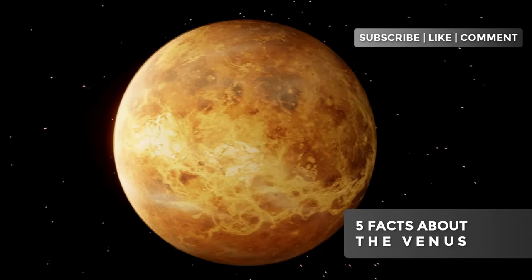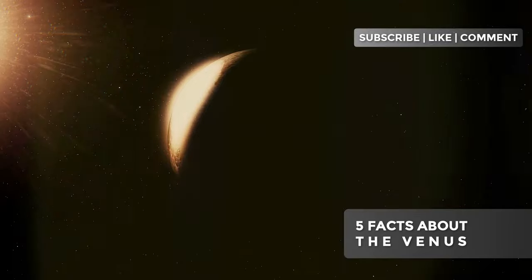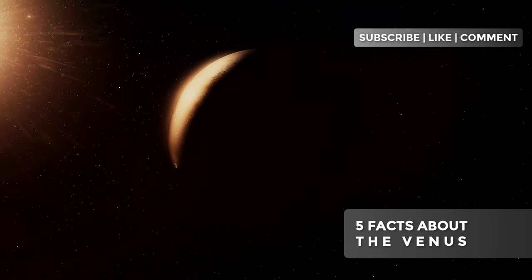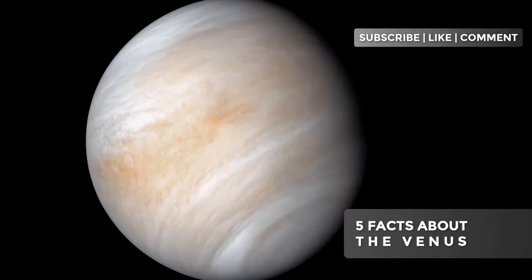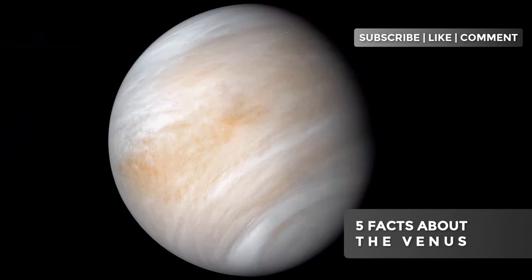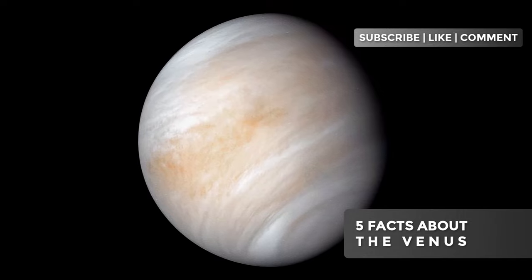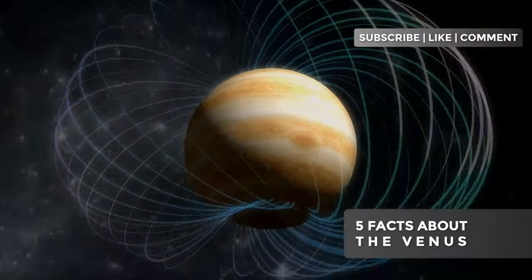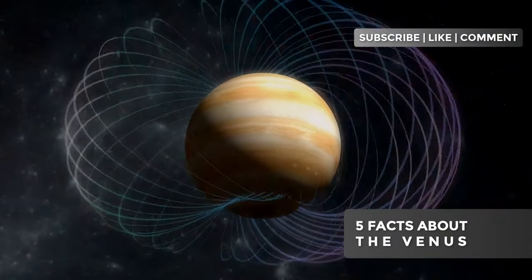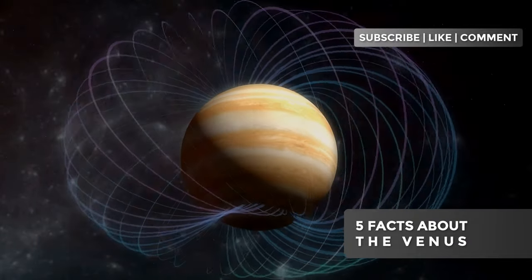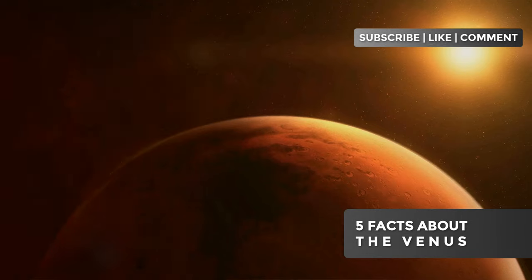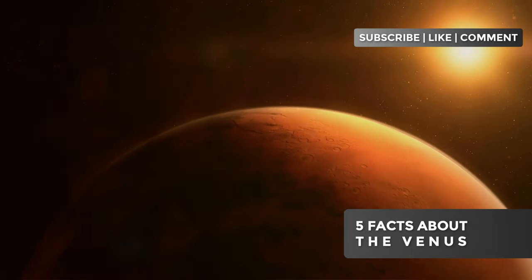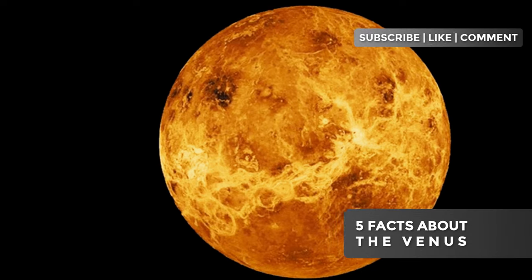But what causes this slow retrograde rotation? Scientists are still debating the exact reasons, but a prevailing theory suggests that massive collisions in the planet's distant past may have drastically altered its rotation. Another hypothesis proposes that tidal forces from the Sun, combined with friction from Venus's dense atmosphere, gradually slowed the planet's rotation over billions of years. This rotational peculiarity of Venus has fascinating implications. For example, without a significant magnetic field, which on planets like Earth is generated by the rapid rotation of the liquid core, Venus is more directly exposed to the solar wind. This results in the continuous erosion of the upper layers of its atmosphere by the Sun, a process that scientists study closely to better understand planetary atmospheric evolution.